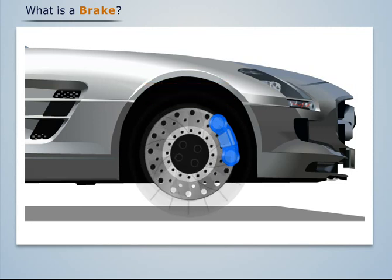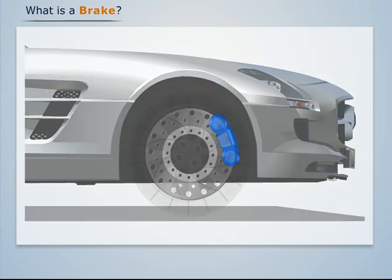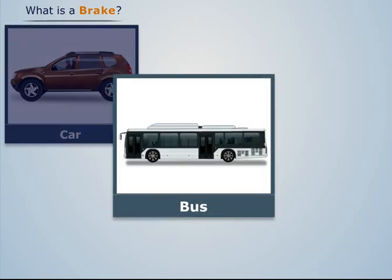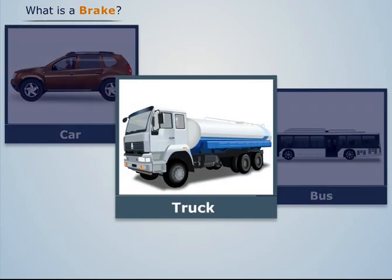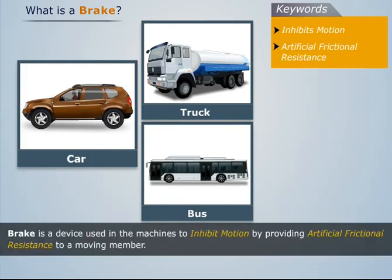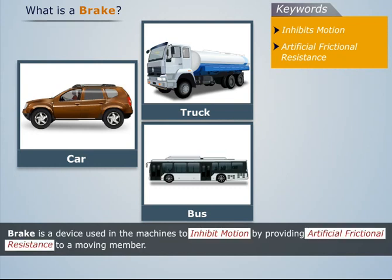Similarly, brakes are used in other vehicles and machines to retard their motion. Thus, a brake is a device used in machines to inhibit motion by providing artificial frictional resistance to a moving member.